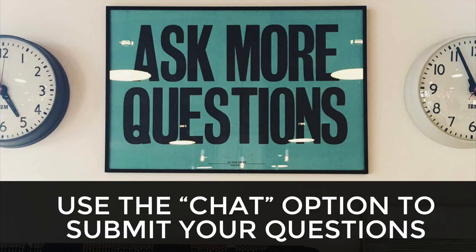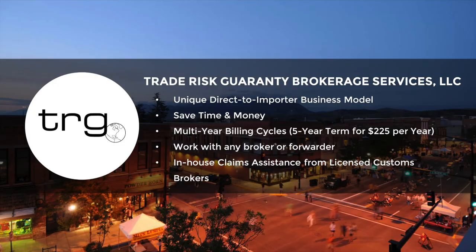We're going to get into questions. Please submit those using the chat option. Before that, I want to quickly remind you that Trade Risk Guarantee works directly with importers and exporters on cargo insurance as well as customs bonds. Rather than working through a customs broker or freight forwarder, we work directly with importers. Working with us typically saves you time and money — our customs bond allows you to purchase up to five years at a time, as low as $2.25 a year. We also have in-house claims assistance from licensed customs brokers so that when an anti-dumping claim comes up, you've got professional assistance.